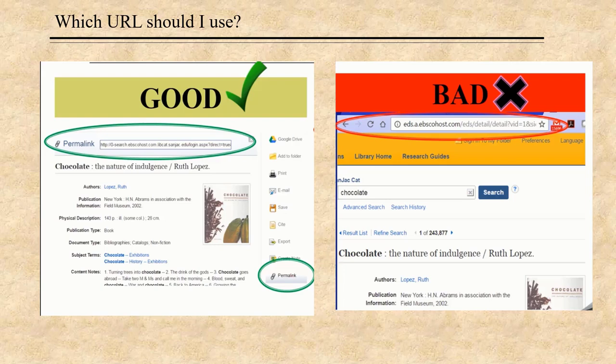Let's talk about database URLs. Library databases are subscription products, and you don't have access to them except through the library's subscription. Your reader may not have access to the same databases you have access to. Using the URL in your browser's location bar will not take your reader to the article you're viewing in the database, even if they have a subscription. Subscription database products are hidden under so many layers of proxy servers and security that most databases provide permalinks for the convenience of their subscribers. Use the permalink whenever possible in your reference list citation. Depending upon the database, you may have to look around to find the permalink, but it should be there. Also, the permalink is much shorter than the URL in the browser location bar.